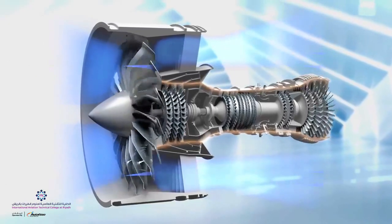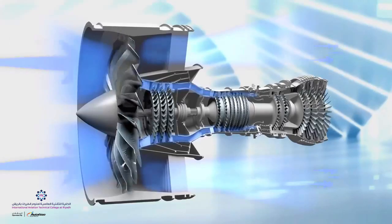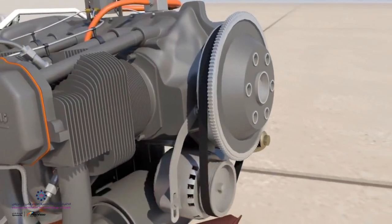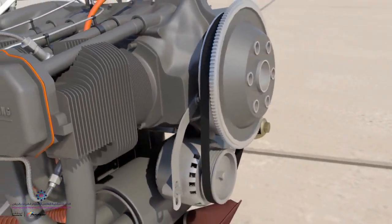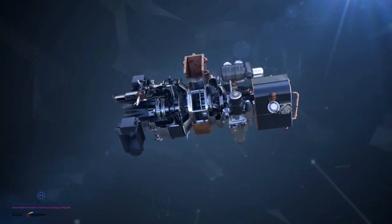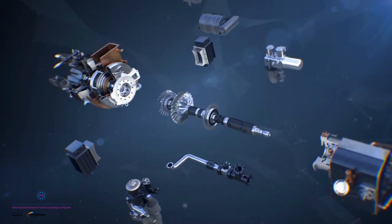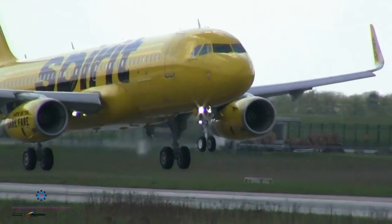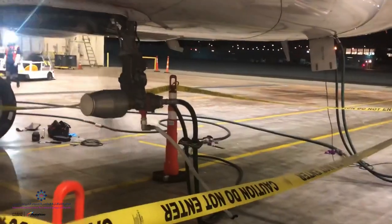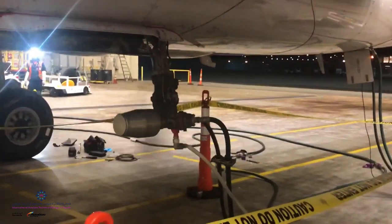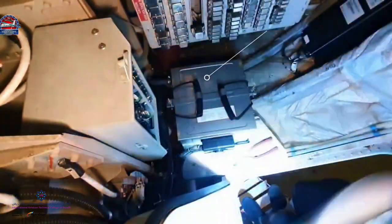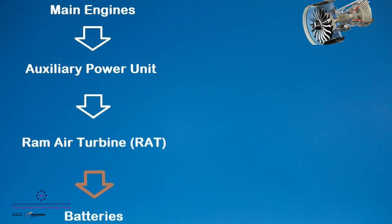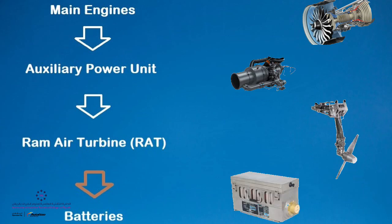First off, it must generate electricity — that is where the generators and alternators play. For perpetuity of power, generators must be connected to primary engines. The main engines, the auxiliary power unit (a small jet engine in the tail of the aircraft), the ram air turbine (an emergency electrical and hydraulic backup located in the belly fairing), down to the batteries — all form part of the aircraft electrical system for a typical large aircraft, in exactly that order from top down in case of failure of each.